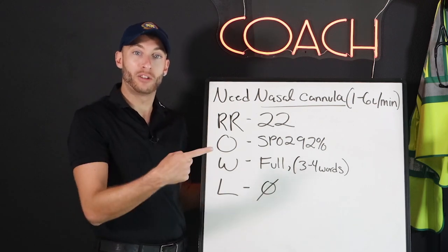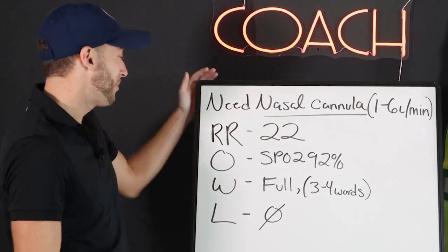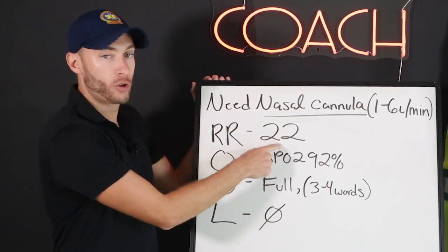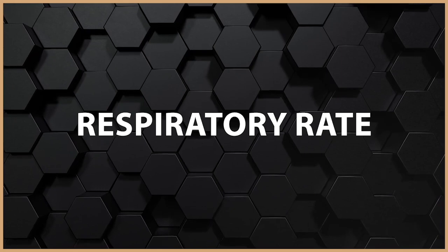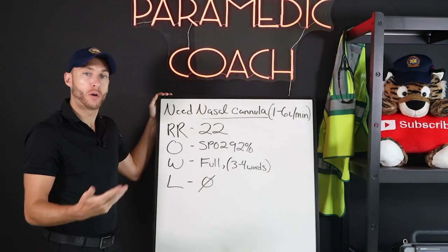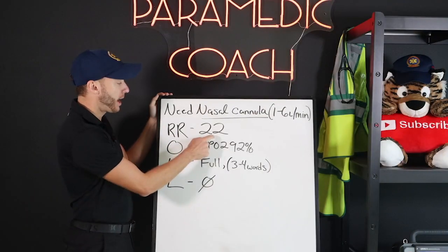Remember that question at the beginning? Now you're going to know what to do. So RR 22 — that's respiratory rate. Now these are all going to be in adult patients. So 12 to 20 is normal, so we're a little high.